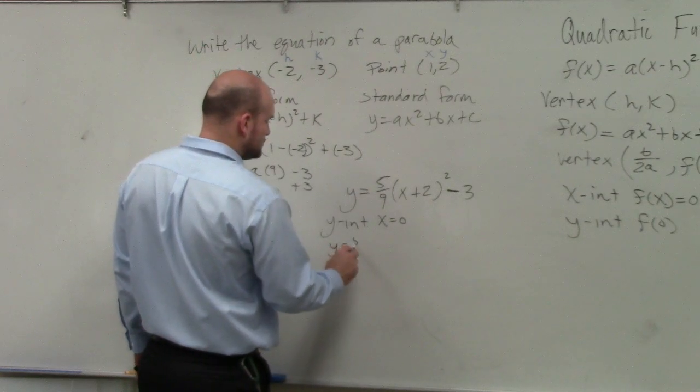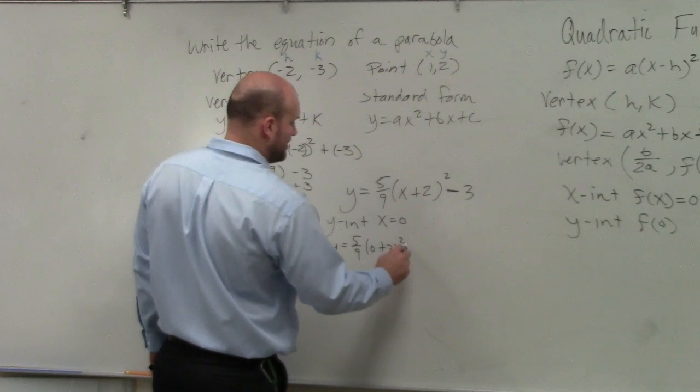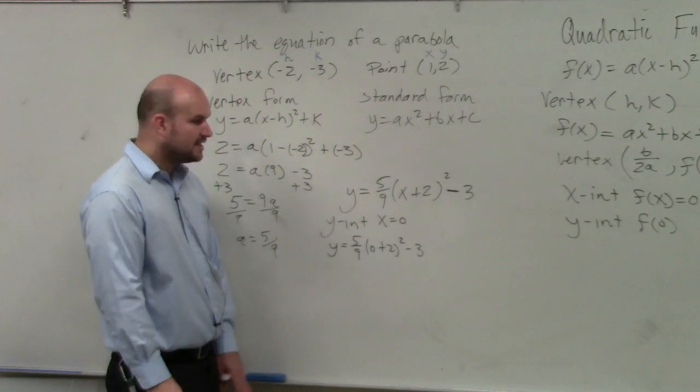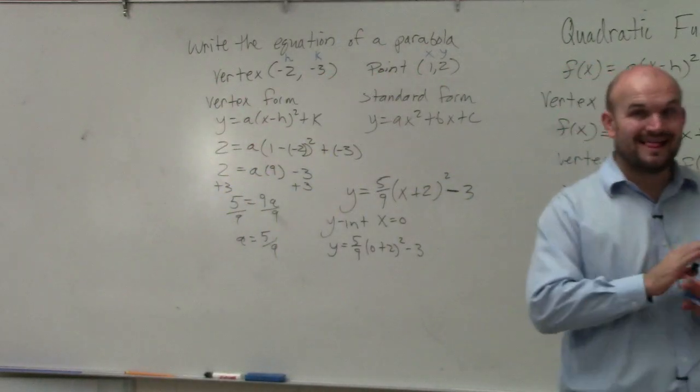So we'd have y equals 5 ninths times 0 plus 2 squared minus 3. That's all you've got to do to find the y-intercept. Replace x with 0 and then solve for y. That's it.